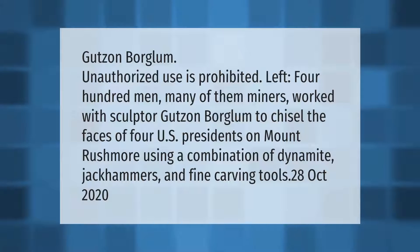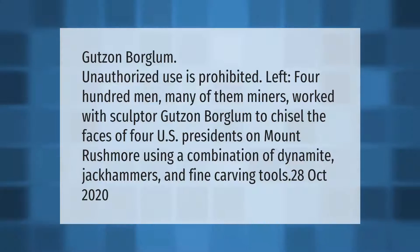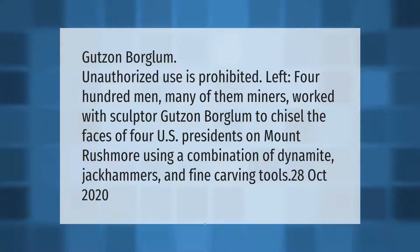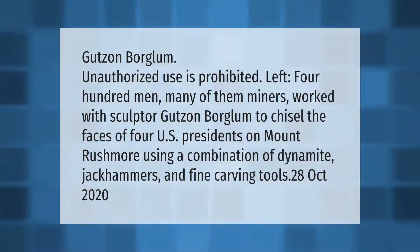Gutzon Borglum and around 400 men, many of them miners, worked with sculptor Gutzon Borglum to chisel the faces of four U.S. presidents on Mount Rushmore, using a combination of dynamite, jackhammers, and fine carving tools.